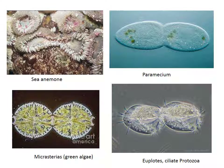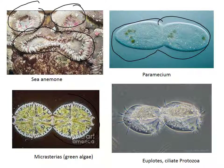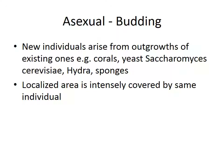Here are pictures. On the top left you see sea anemones — here is one caught in the actual act of splitting into two. Here is a paramecium caught in the act of splitting into two. Here are green algae duplicating every single part of themselves and making a mirror image. And here are ciliate protozoa — euplotes — with little hairs, shown dividing into two and making an exact copy.